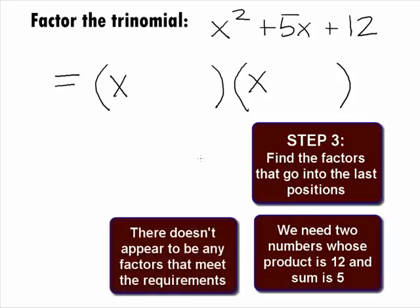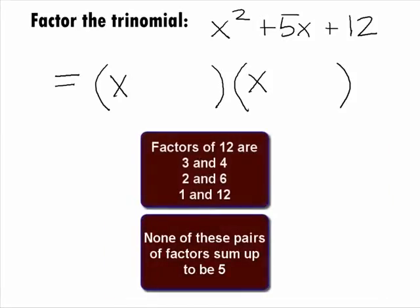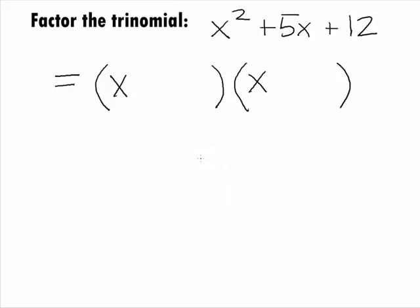I can't think of any 2 numbers that fit that description, can you? The factors of 12 are 3 and 4, or 2 and 6, or 1 and 12. None of these pairings add up to 5. Since we checked all possible factors and none of them worked, this means the trinomial does not factor.